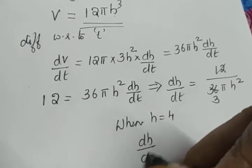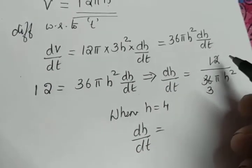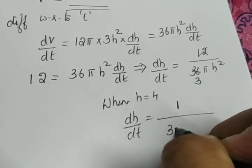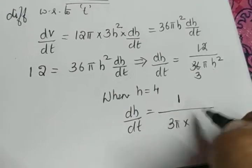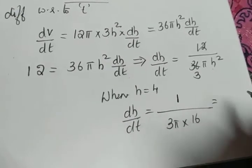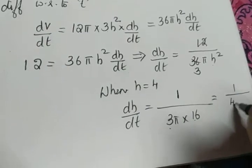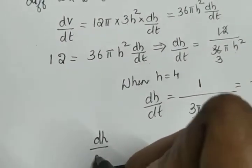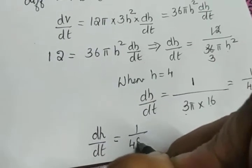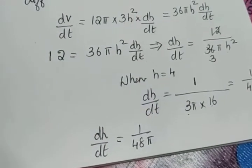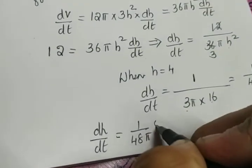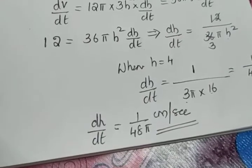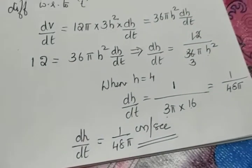When h = 4, dh/dt = 1/(3π · 4²) = 1/(3π · 16) = 1/(48π). The unit of height is centimeters and time is seconds, so the final answer is dh/dt = 1/(48π) centimeters per second.